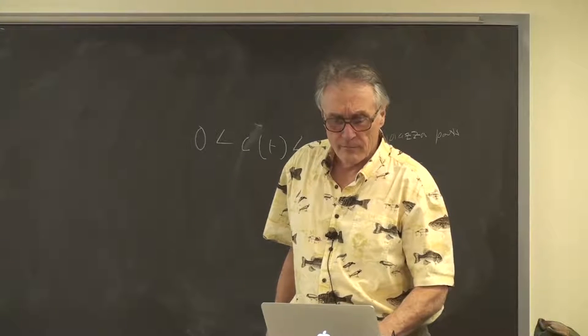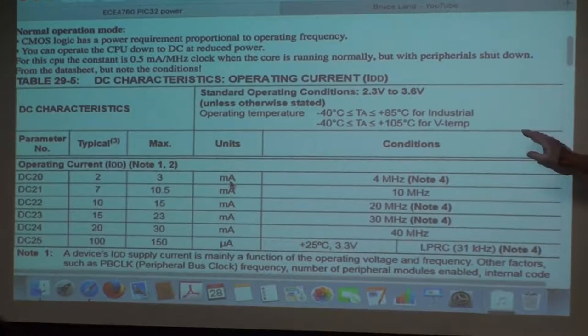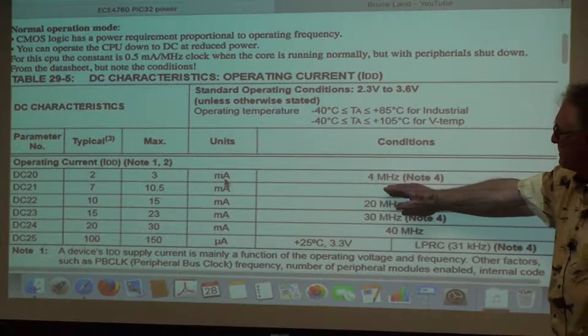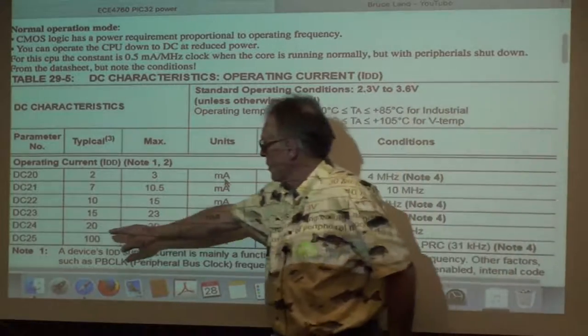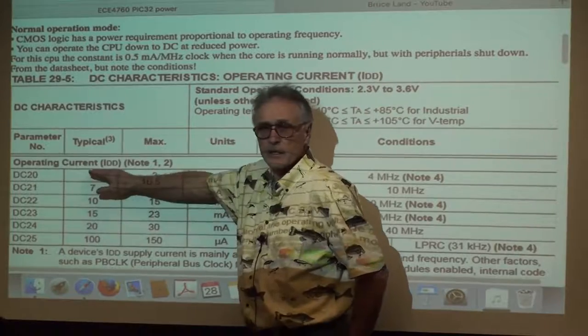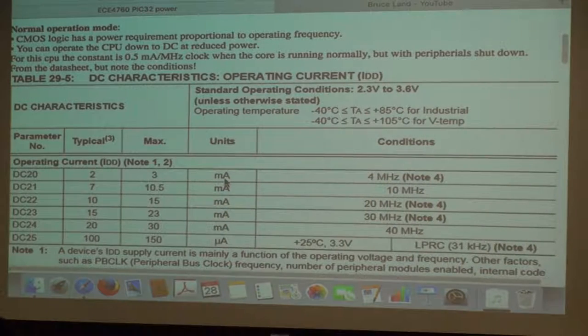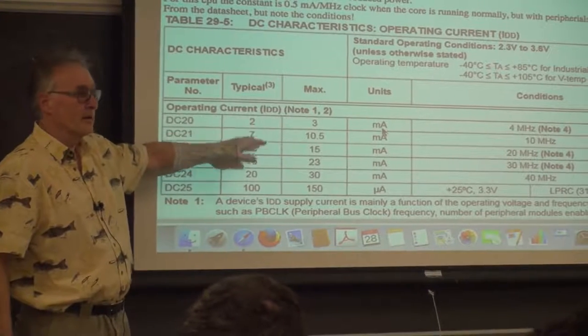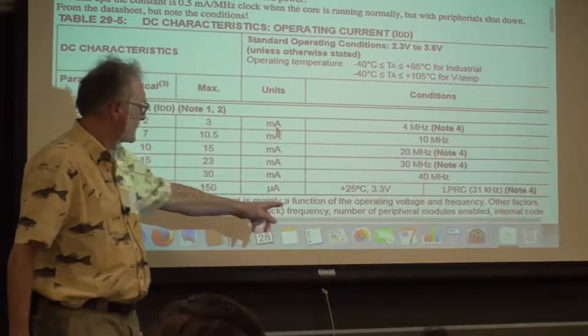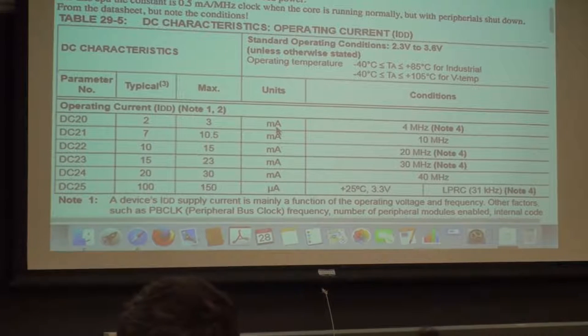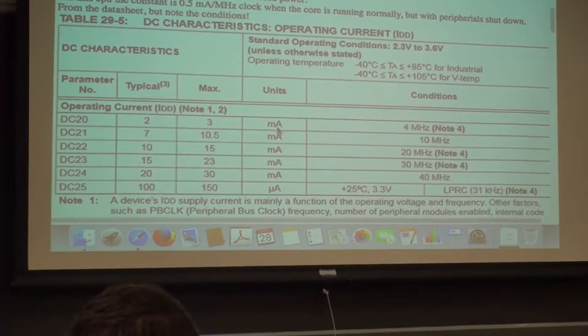The really basic feature — right out of the data sheet — is that since all the power is dynamic power, if you slow down the CPU from 40 MHz to 30, 20, 10, or 4 MHz, the current in the CPU scales exactly linearly. You can drop the power required from 20 milliamps down to 2 milliamps by dropping a factor of 10 in frequency. If you go to the low-power RC oscillator at 31 kHz, you're down to about 100 microamps.